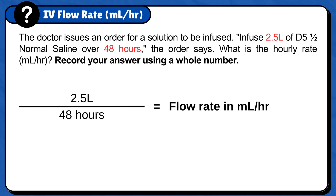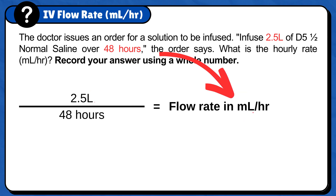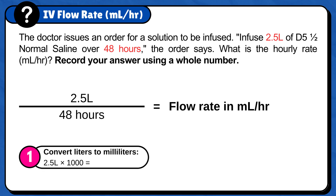Notice that the volume ordered is in liters, but the answer needs to be in milliliters. Therefore, convert liters to milliliters: 2.5 liters times 1,000 is 2,500 milliliters.